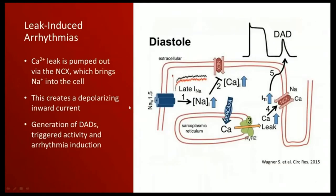The consequence of calcium leak in the cardiomyocyte is that calcium is released not only in systole but also in diastole. This intracytoplasmic calcium must be removed, so in exchange with sodium via NCX it is pumped out, but the sodium entry creates delayed after-depolarizations, which leads to arrhythmia induction. The calcium leak is therefore responsible for the induction of arrhythmia.